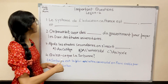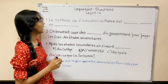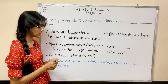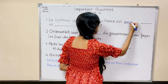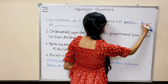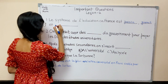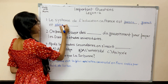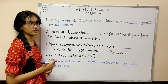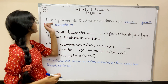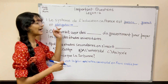Starting with the first question: le système de l'éducation en France est — we have three blanks to fill. The answer is public, gratuit et obligatoire. This is an important question which may come as a subjective type also. You should know that the education system in France is public, free and mandatory.